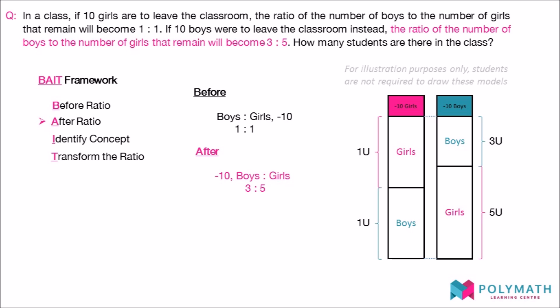When we have the before and after ratios written down, we can then identify the concept to be used in this question by asking ourselves what remains unchanged. As you can see from the bar models, in both ratios, we are missing 10 students. The only difference is the gender of the students who have left. The total number of students who remain in the classroom is the same. Thus, we can conclude that the total of the ratios should have remained the same.